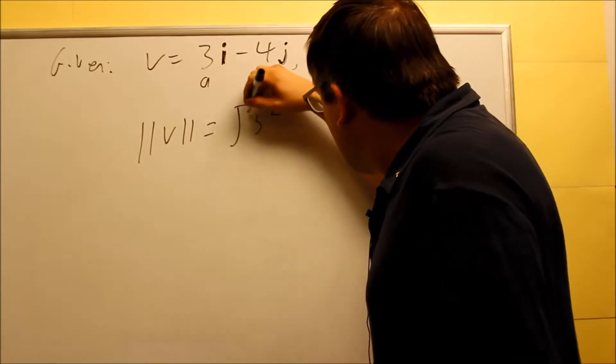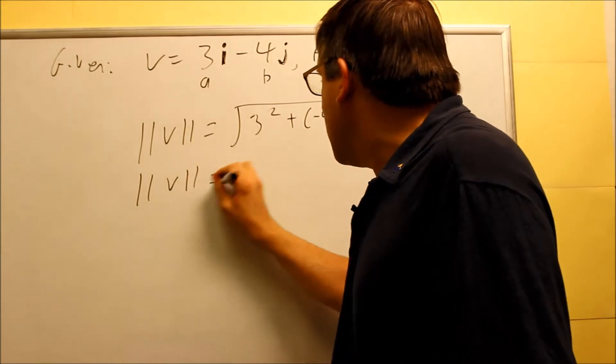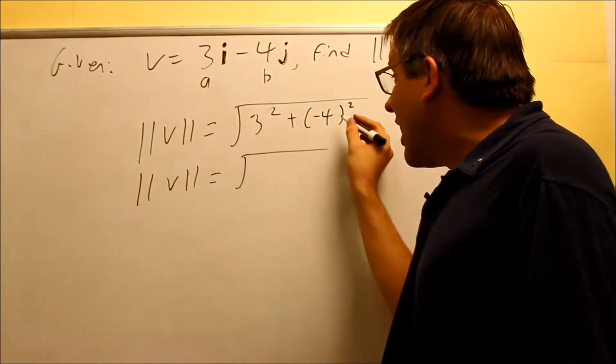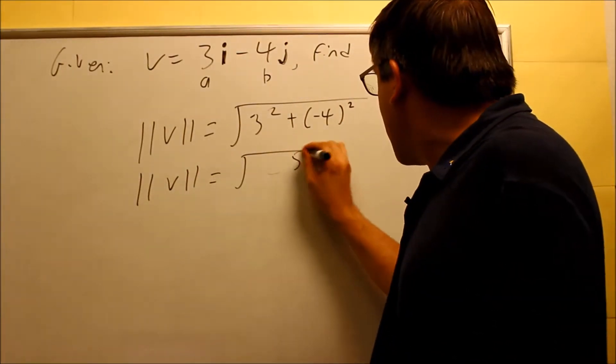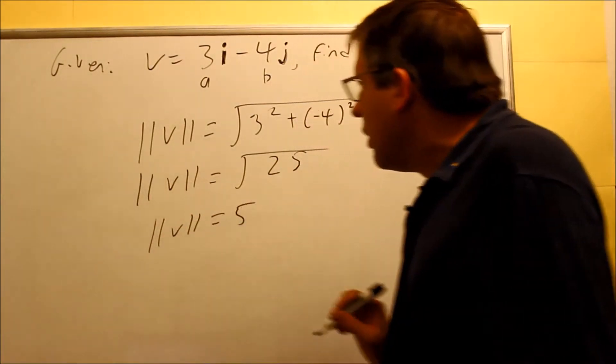And then you have plus (-4)². Your magnitude of V is equal to the square root of 9 plus 16 is going to give you 25. And then when we work that out, you get the magnitude of V is equal to 5.